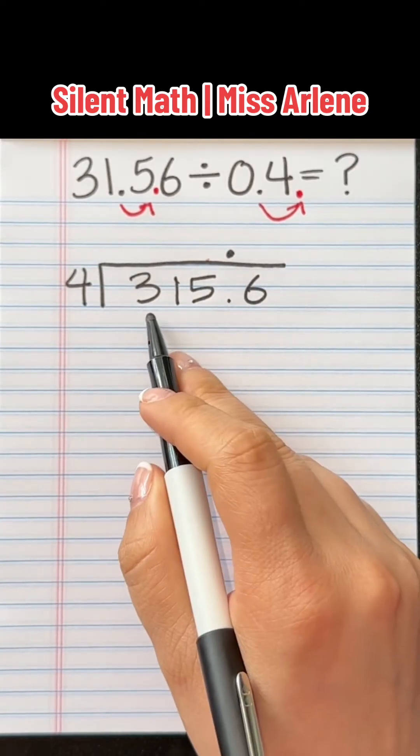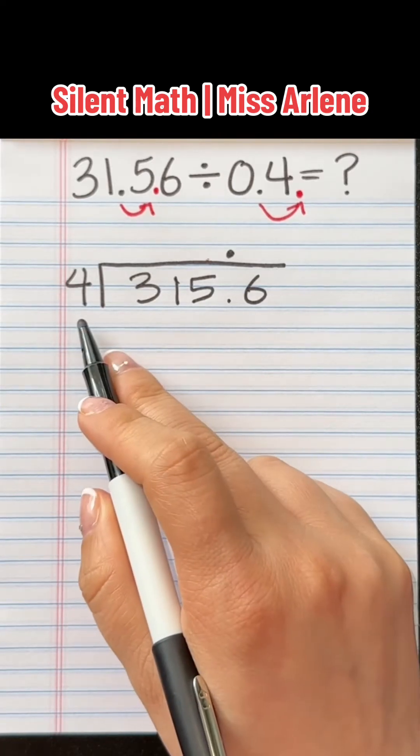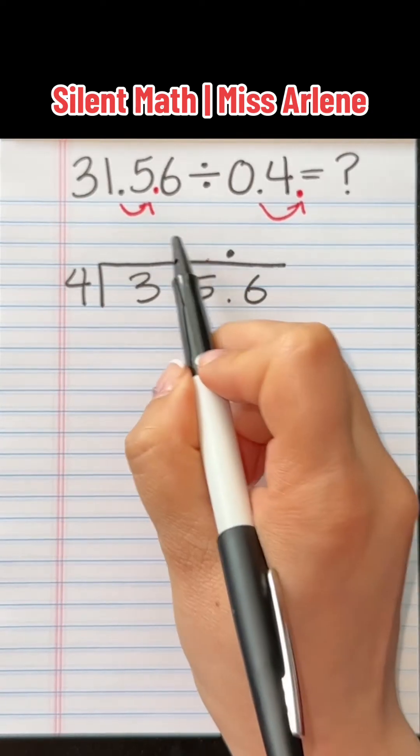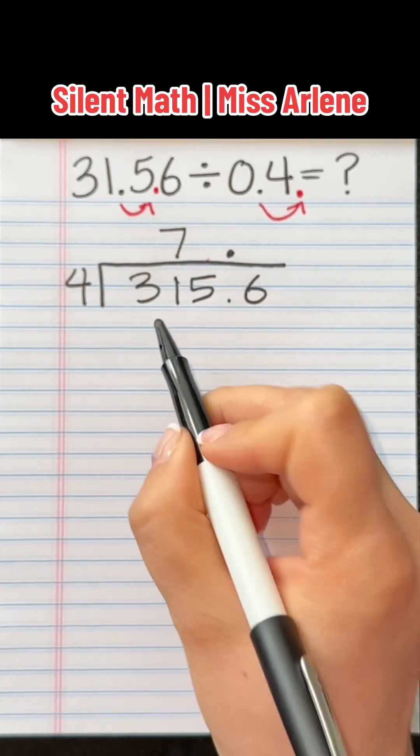How many groups of 4 can go into 3? 0. So we're going to extend it to 31. How many groups of 4 can go into 31? Only 7 groups because 7 groups of 4 is 28.